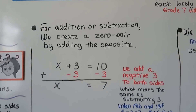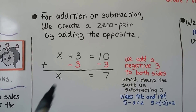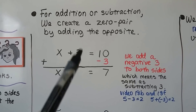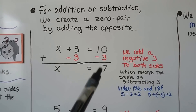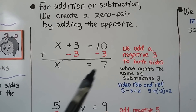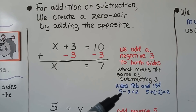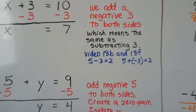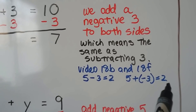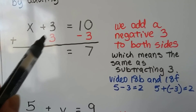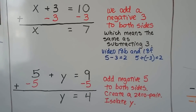For addition or subtraction, we create a zero pair by adding the opposite. We have x plus 3 — that's an addition problem — so we're going to add a negative 3. That turns into nothing. We drop down the x, subtract the 3 from this side, and get 7. We've isolated x to equal 7. Adding a negative is the same thing as subtracting a positive, so you can look at it either way — same answer.